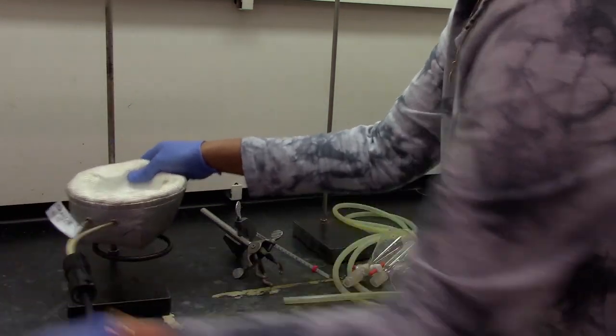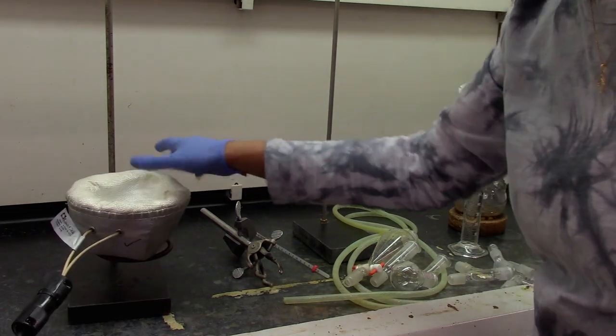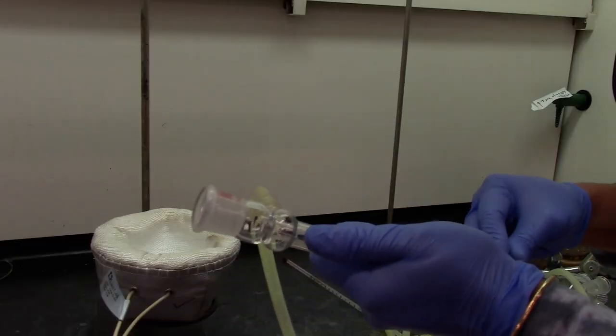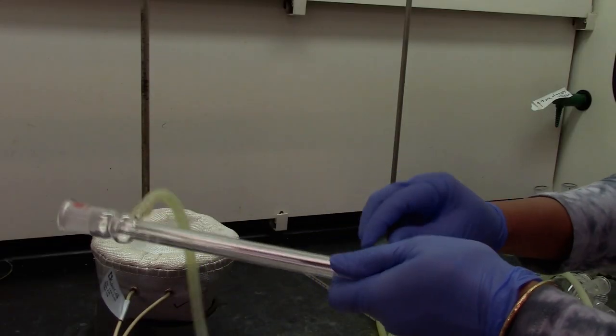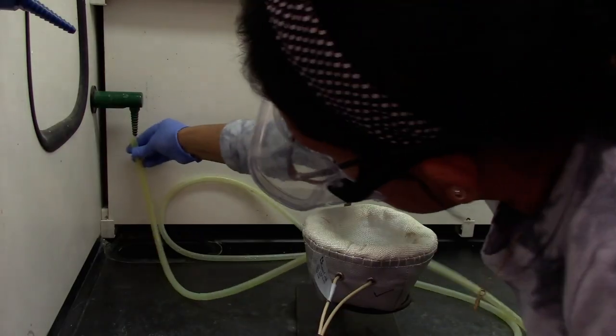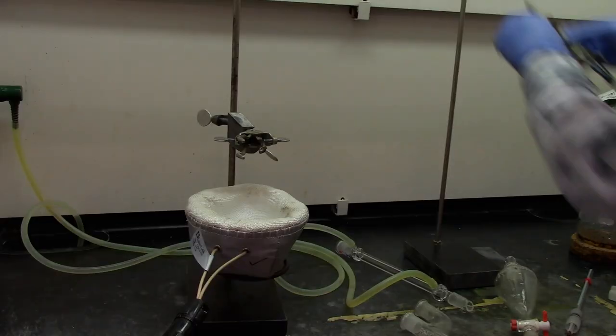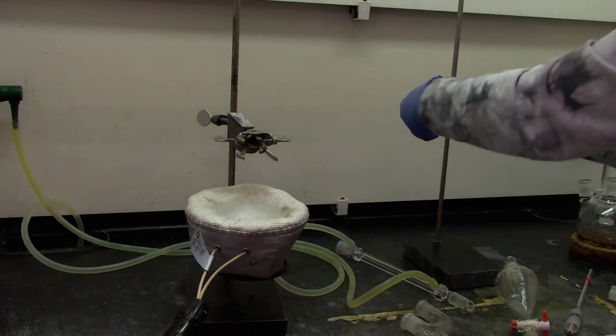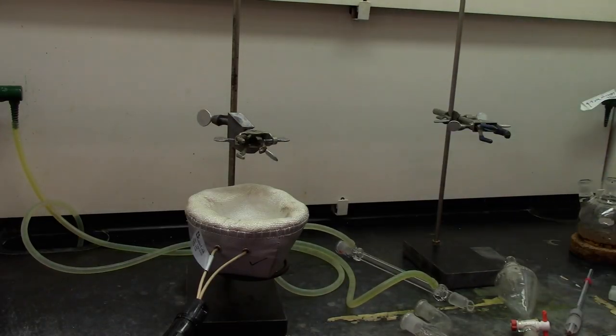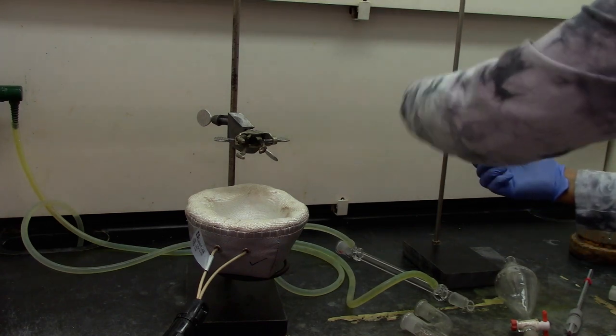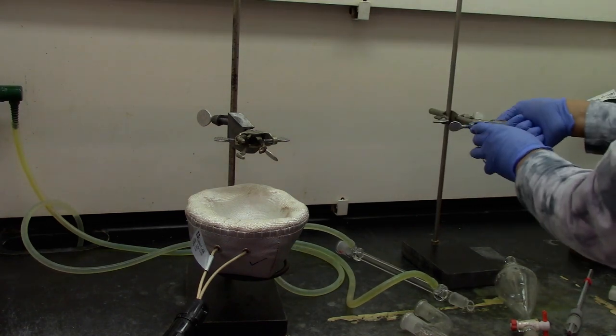Set up the mantle, the water connections to the west condenser, and turn on the water. Attach a clamp to hold the 500ml round bottom flask. And in a second ring stand, attach another clamp to hold the collection flask.